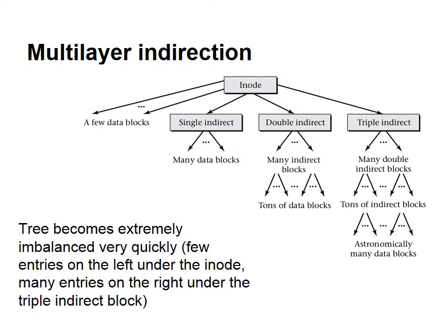For even larger files, you can use what's called a double indirect or a triple indirect block, which is where you've got layers of indirect blocks that all refer to each other. You can see an example here represented as a tree, but the downside is that when your INODE refers to both single blocks and triple indirect blocks, it becomes imbalanced in that the data blocks are not evenly distributed across the whole tree.